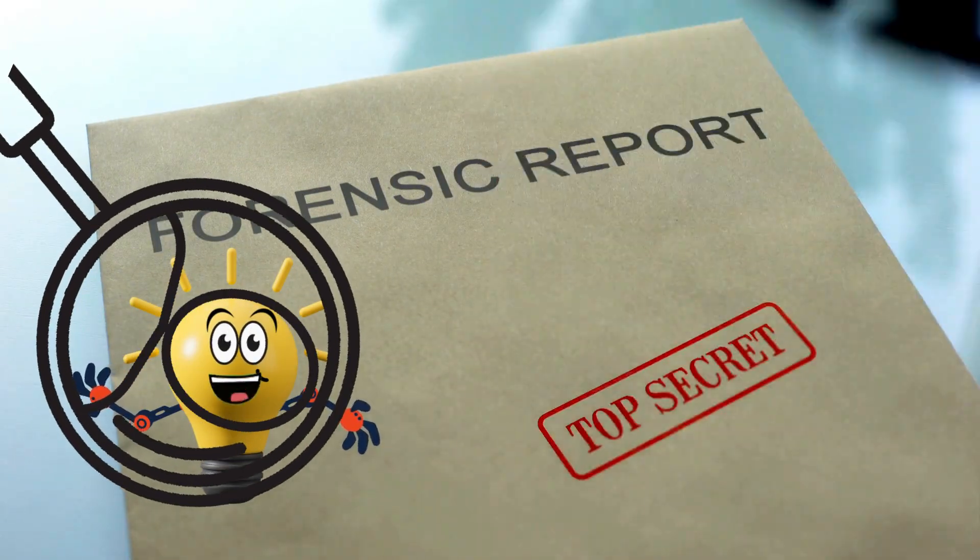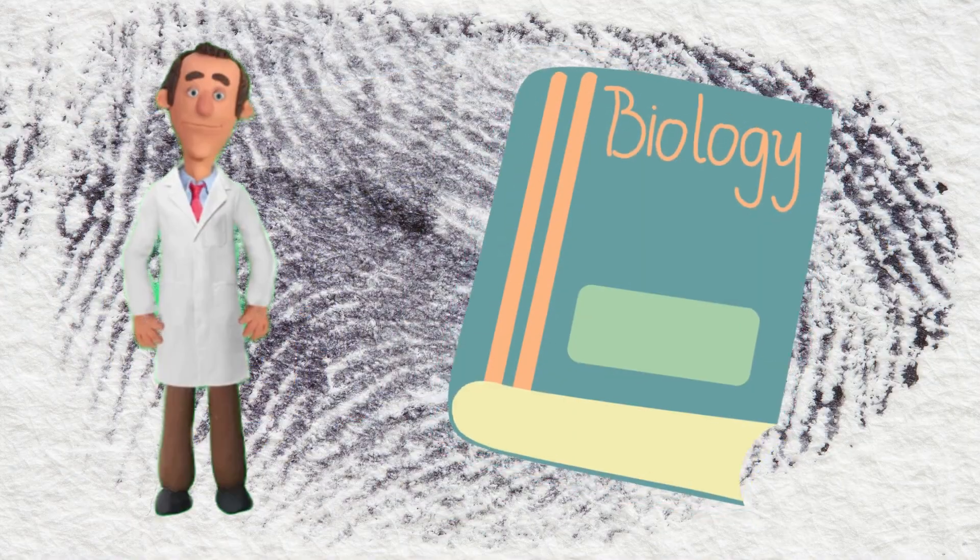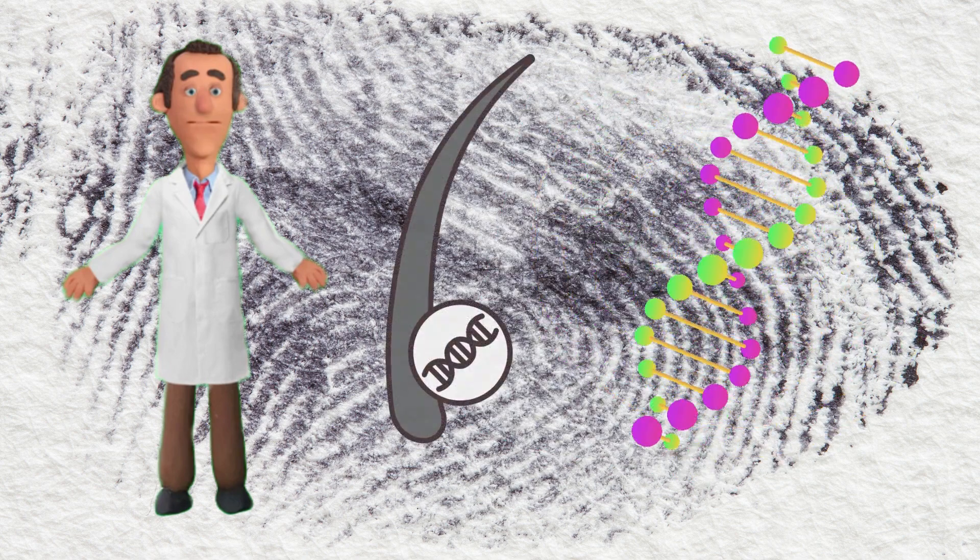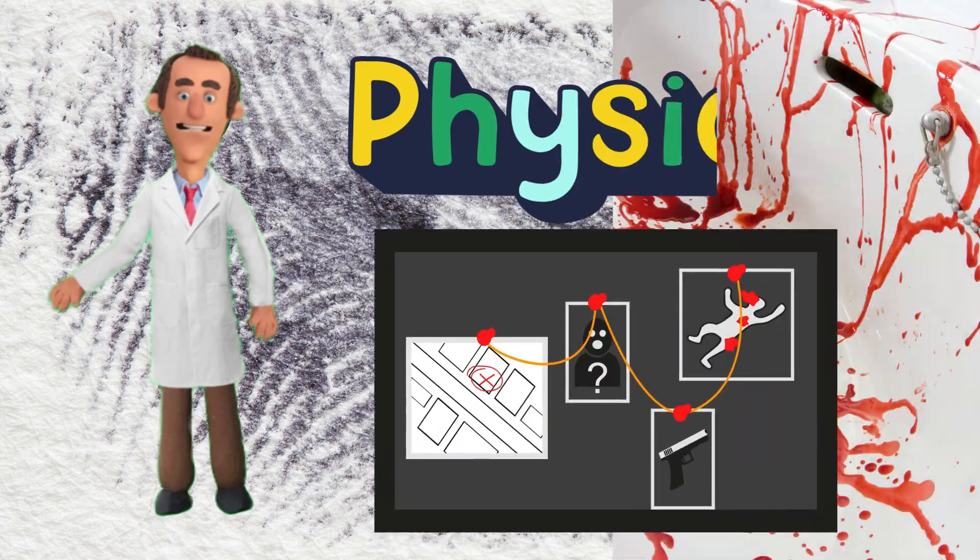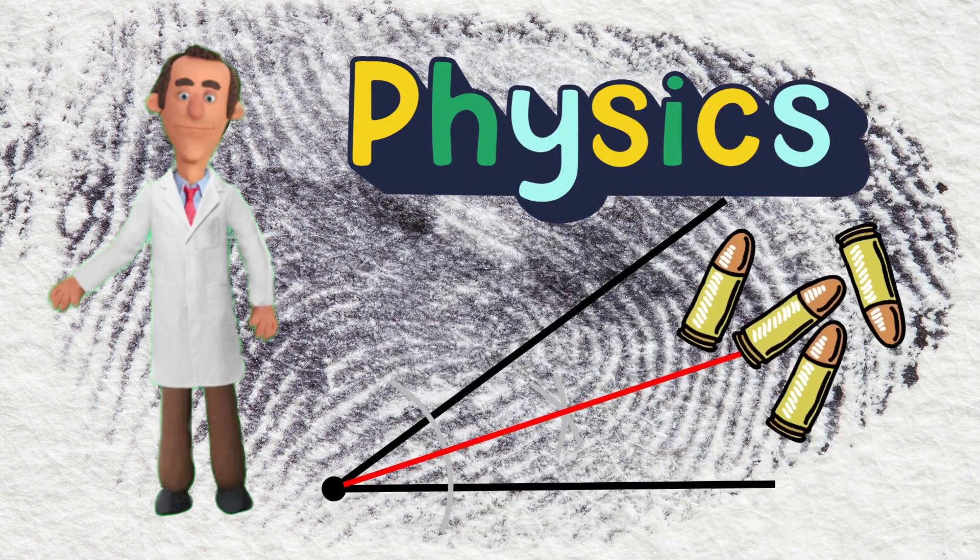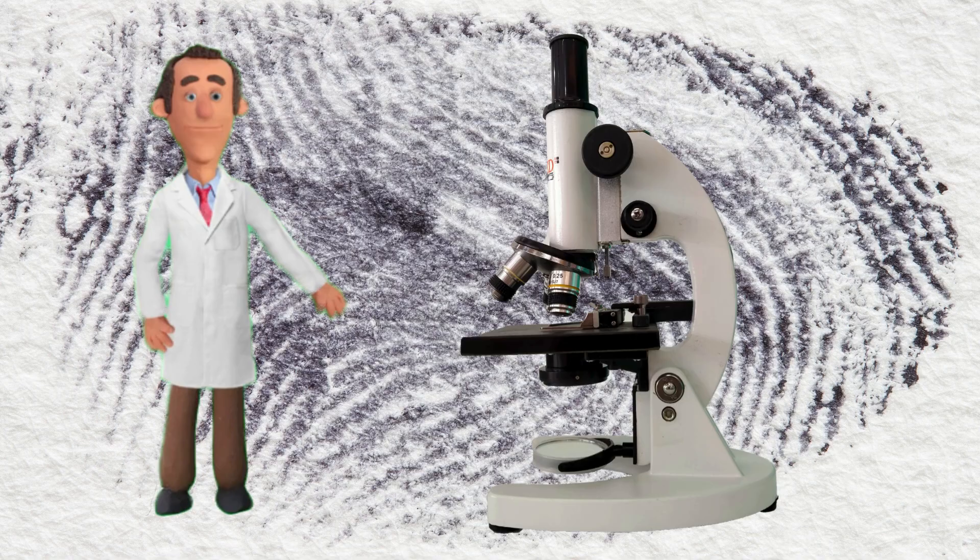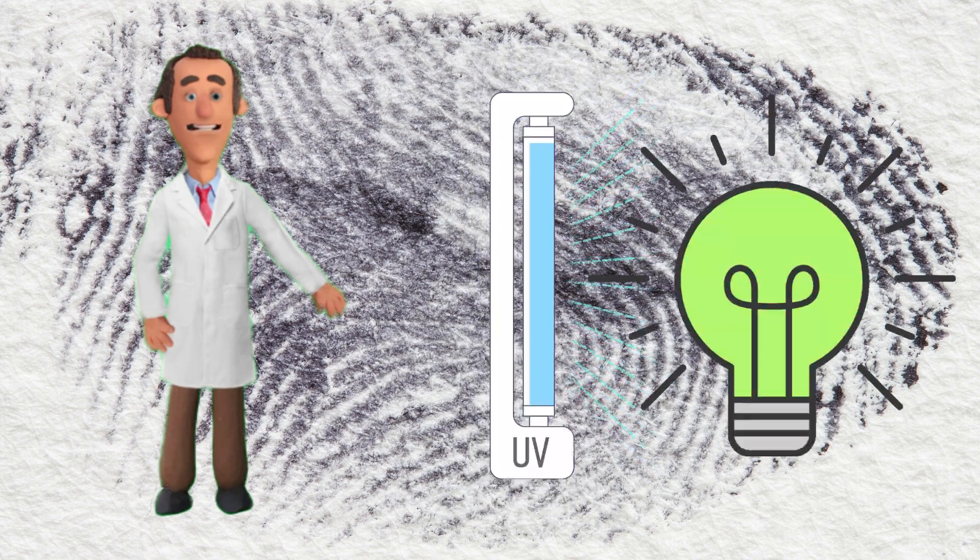Tell us about the science-y stuff you actually do. We use biology to study DNA and hair, chemistry to test unknown substances, and physics to understand things like blood spatter or bullet angles. I also use microscopes, UV lights, and computers to analyze evidence.